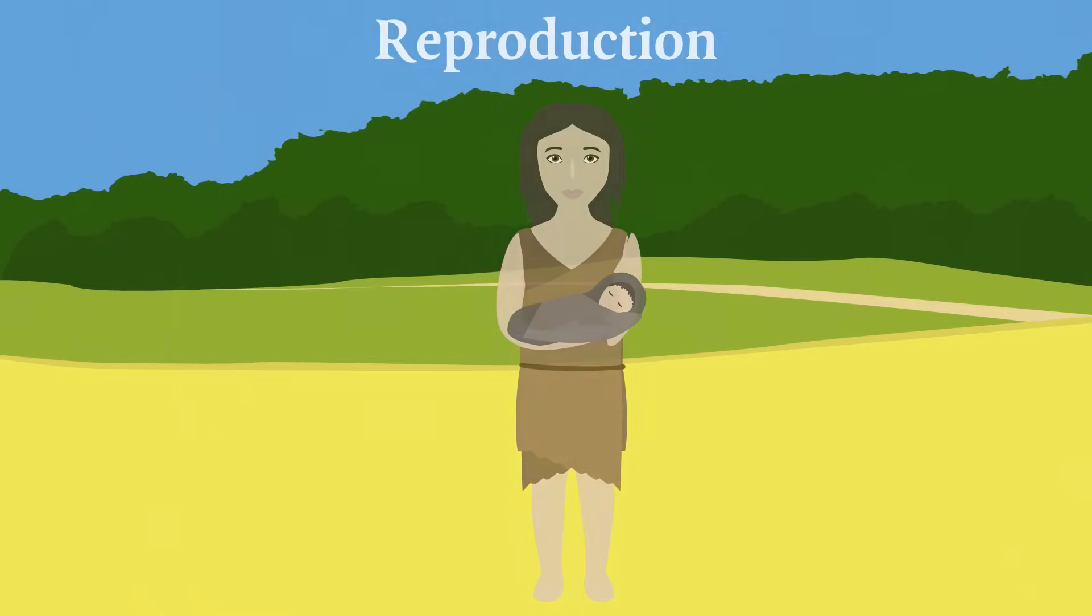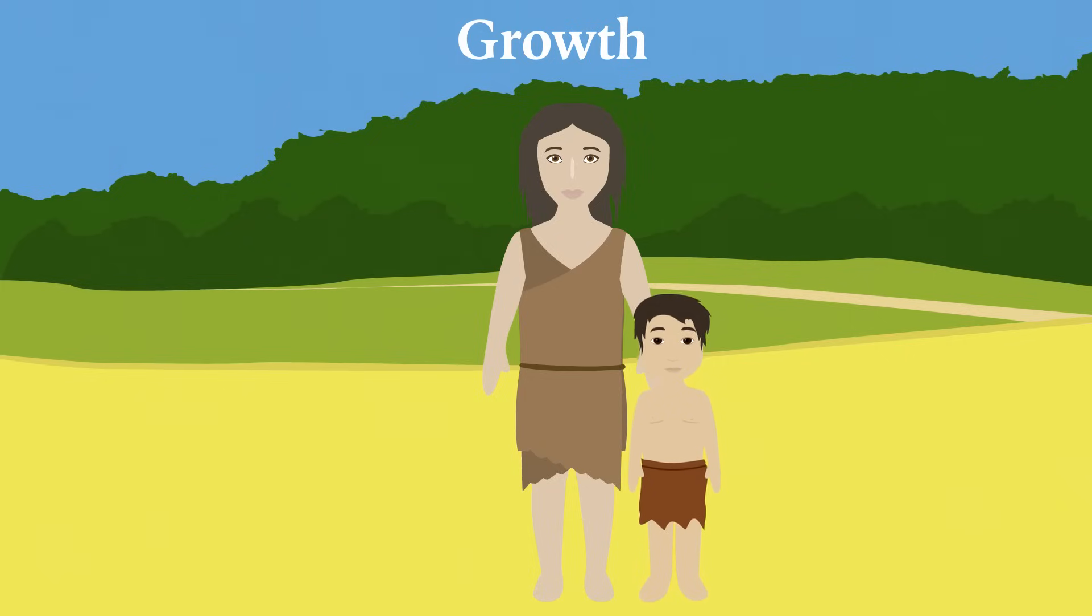There's reproduction. Living things have to reproduce new offspring or else their species would not survive. Then we have growth. Every living thing has to use the nutrition they collect in order to increase their size and grow stronger.